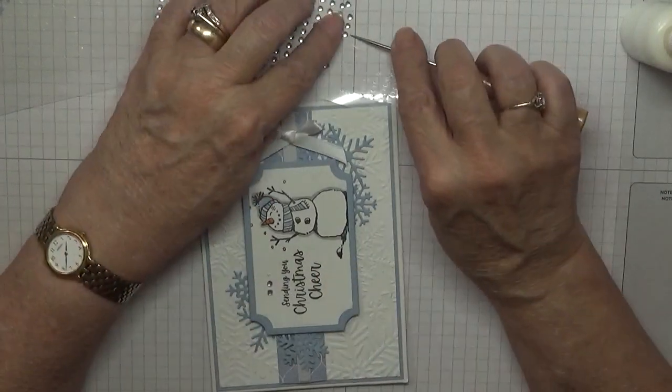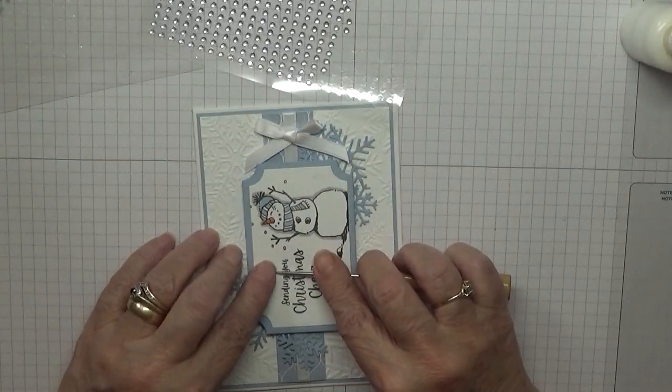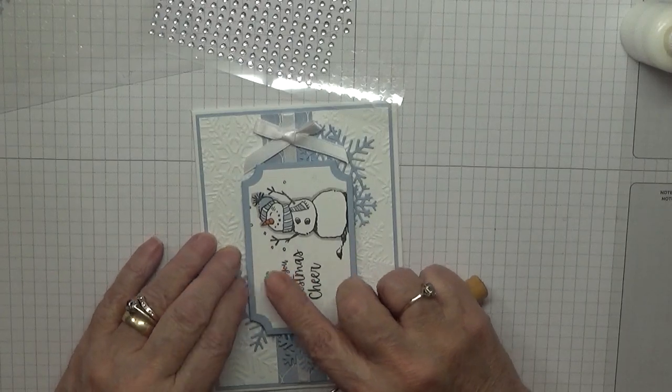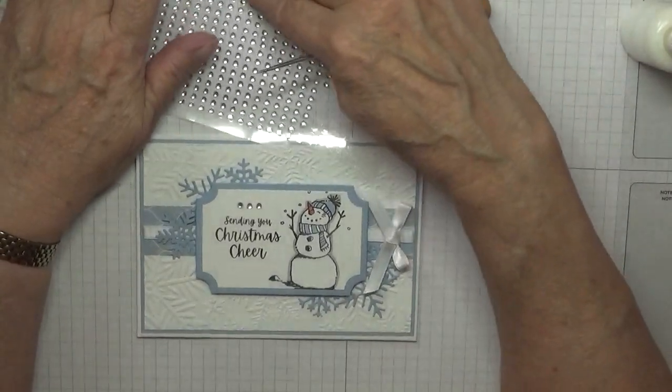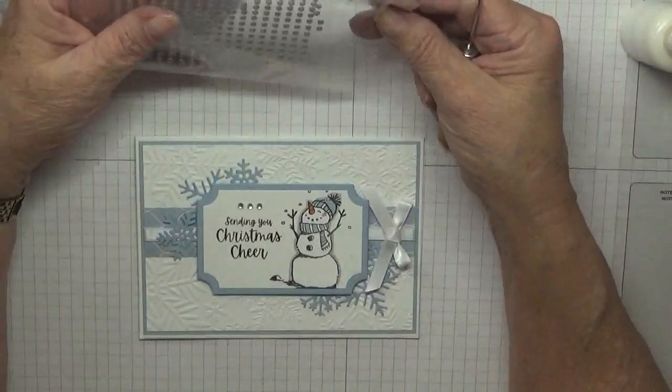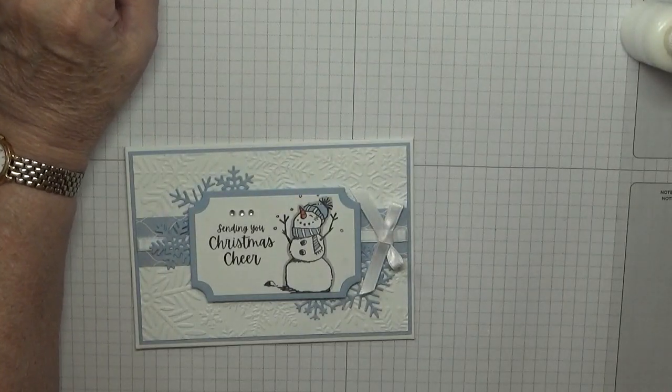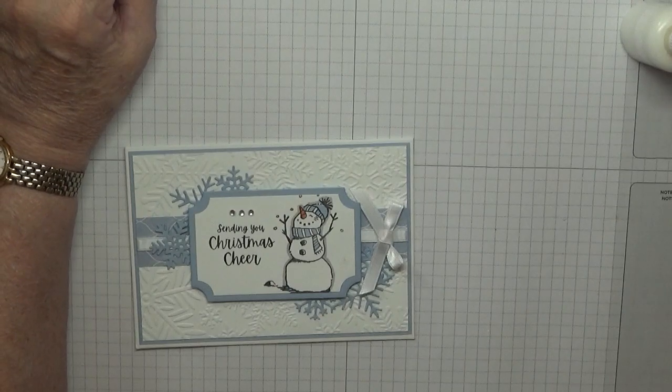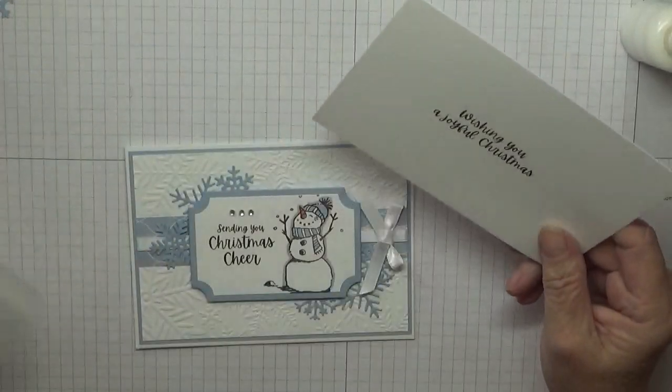Just to make sure they're lined up. There we are. I have pre-stamped a sentiment, and these have come out—I think they've come out of that. Wishing you a joyful Christmas. Yeah, they've come out of this one, wishing you a joyful Christmas.